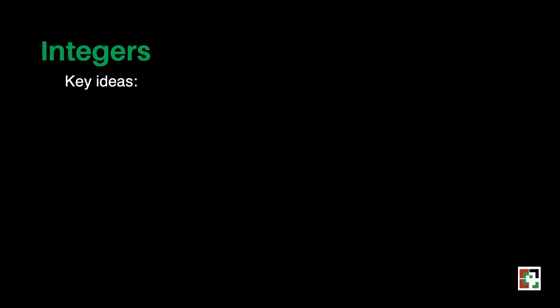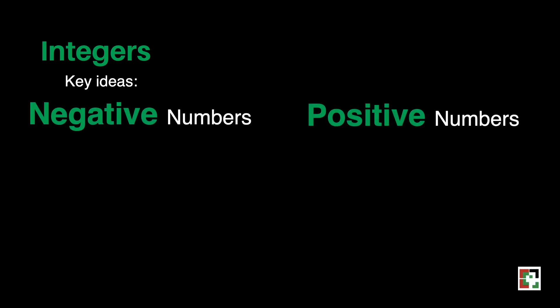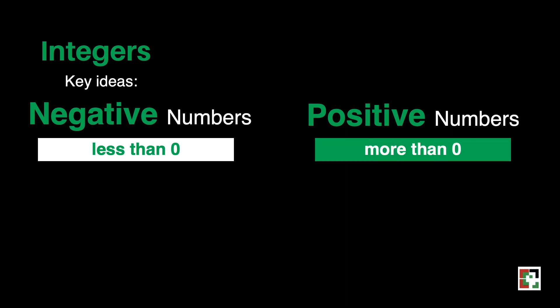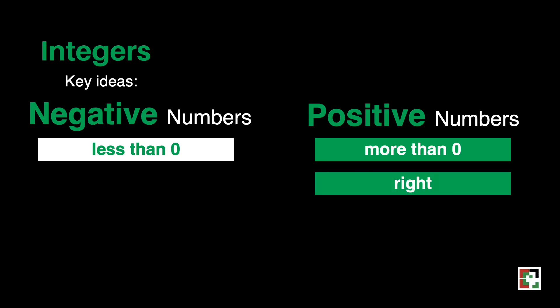Before we go to some exercises, let's have first a little bit of discussion on negative and positive numbers. In mathematics, a negative number is a real number that is less than 0 and positive numbers are more than 0. If positive represents a movement to the right, then negative represents a movement to the left.